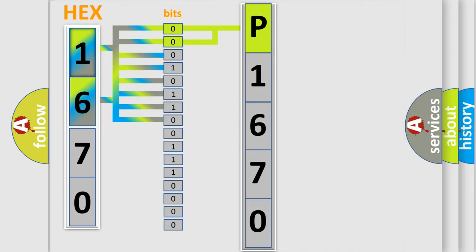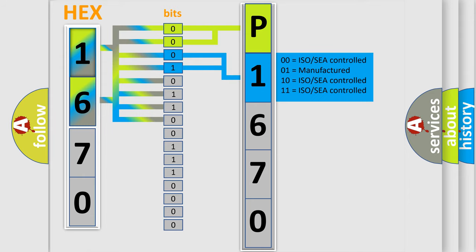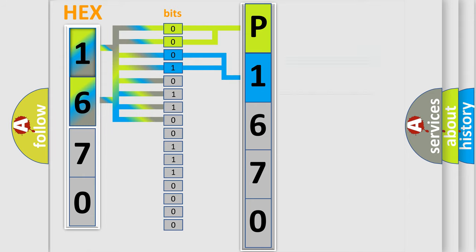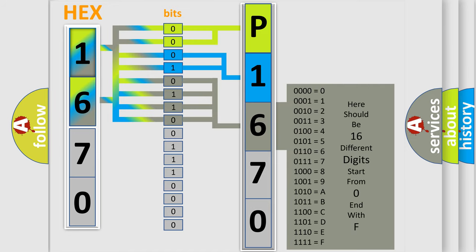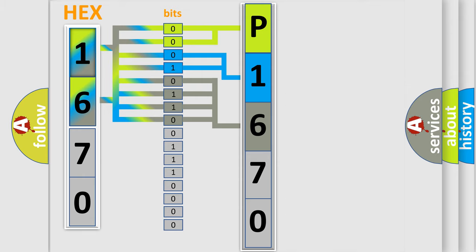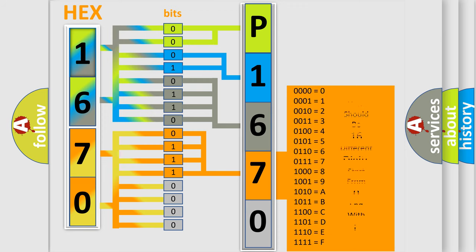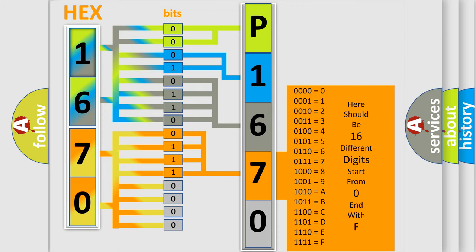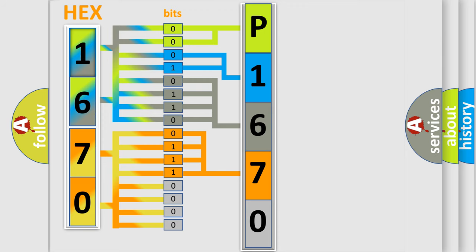The next two bits determine the second character. The last bits of the first byte define the third character of the code. The second byte is composed of a combination of eight bits. The first four bits determine the fourth character, and the combination of the last four bits defines the fifth character. A single byte conceals 256 possible combinations.